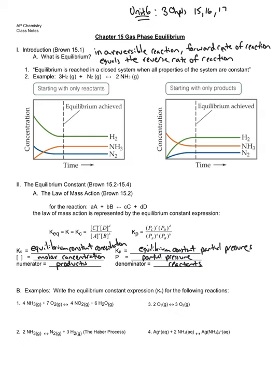Chapter 15: gas phase equilibrium. We are going to specifically look at gaseous reactions and reactions that involve gases. But first of all, what is equilibrium? Equilibrium is in a reversible reaction — and what we're going to see with a reversible reaction is a double-sided arrow, where the products can actually collide and form reactants, so there is now a back and forth to these reactions.